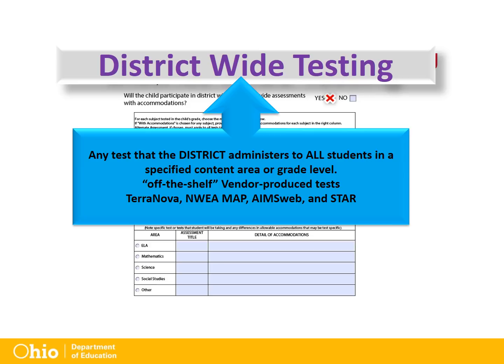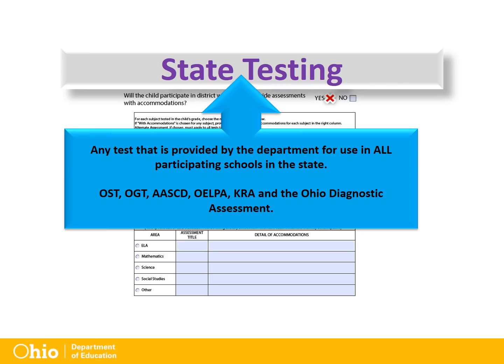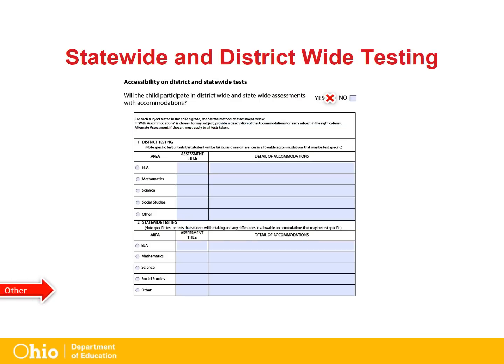OAC 3301-7-01 defines a state test as any test that is provided by the department for use in all participating schools in the state. These include the OST, the OGT, the AASCD, the OELPA, the KRA, and the Ohio Diagnostics Assessment. Other tests that may be used to meet some state requirements while not technically state tests may be included in the Other section.